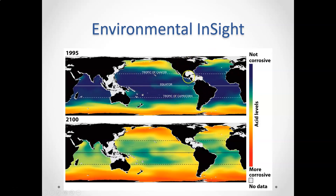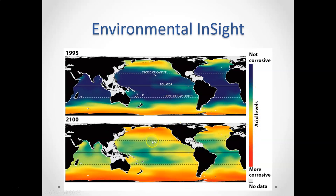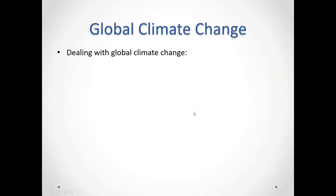This graphic shows acidity levels comparing what we saw in 1995 to what we expect to see in the next 75 to 80 years. Areas in blue and green are cooler waters where typically there is less acidity and less absorption of carbonic acid. In the next 75 to 80 years, we expect acidity levels in the ocean to increase globally worldwide, with potentially devastating impacts.